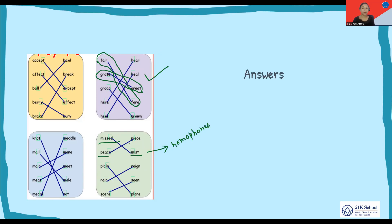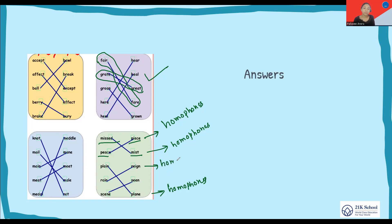Let's look at 'peace' and 'piece.' 'Peace' means a kind of silence, quietness, or the happiness you feel inside — peaceful, without any noise. The other 'piece' is a chunk or fragment of something. 'Plain' and 'plane' sound exactly the same — so these are also homophones. 'Rain' and 'reign' — although the spellings are different and the meanings are completely different, they sound exactly the same and hence are homophones.